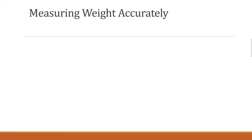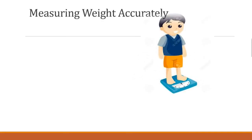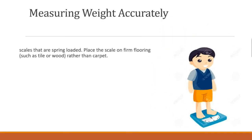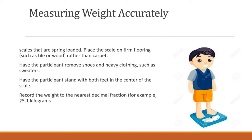Measuring Weight Accurately: Place the scale on firm flooring such as tile or wood rather than carpet. Have the participant remove shoes and heavy clothing such as sweaters. Have the participant stand with both feet in the center of the scale. Record the weight to the nearest decimal fraction, for example 25.1 kilograms.